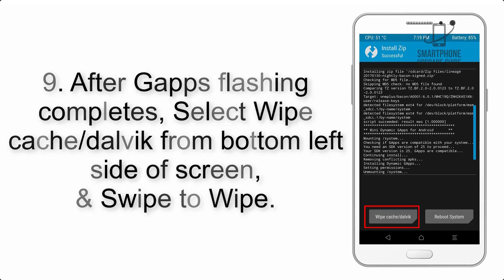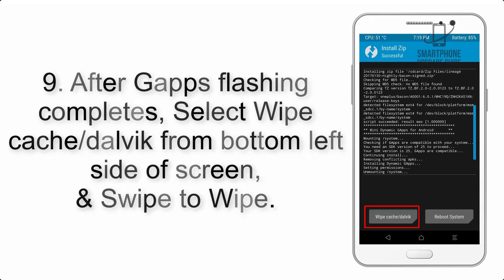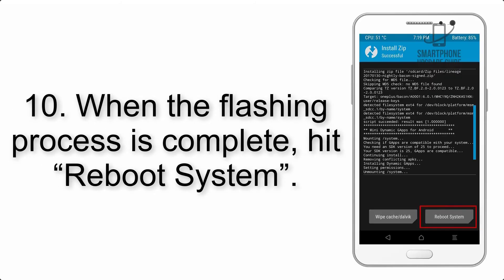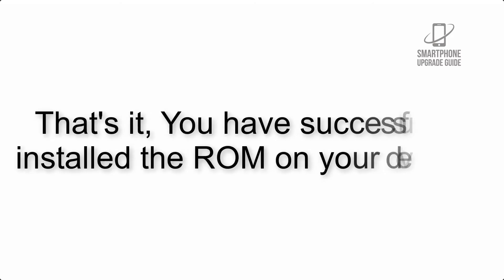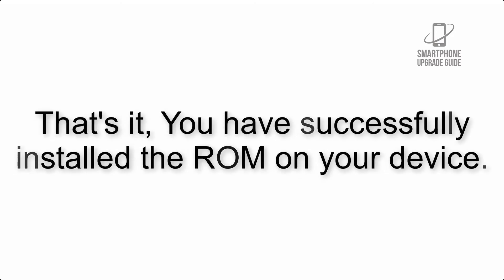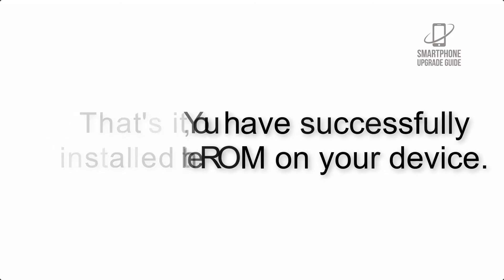Step 8: Flash the GApps zip package in the same manner. Step 9: After GApps flashing completes, select Wipe Cache and Dalvik from the bottom left side of the screen and swipe to wipe. Step 10: When the flashing process is complete, hit Reboot System. That's it — you have successfully installed the ROM on your device.